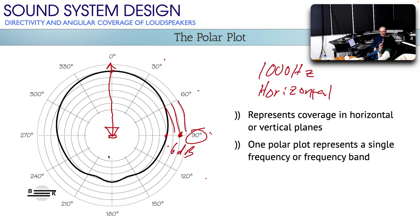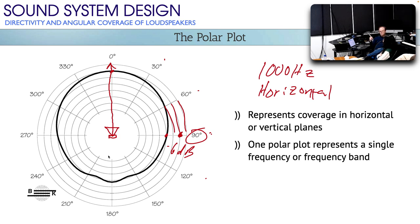The nice thing about polar plots is they're relatively easy to read and you can get a decent amount of detail. The problem is you need one for every frequency you care about, and two of them — one for horizontal and one for vertical. It ends up being page after page of polar plots, an entire manual full of them to represent the full performance of a loudspeaker. These days we don't really do paper, so it's just another click on a PDF. But back when it had to be printed and shipped with the loudspeaker, that was a lot of pages.